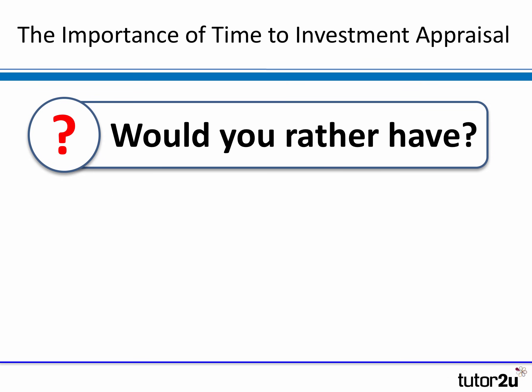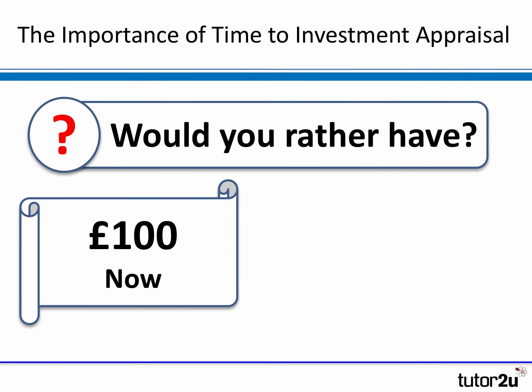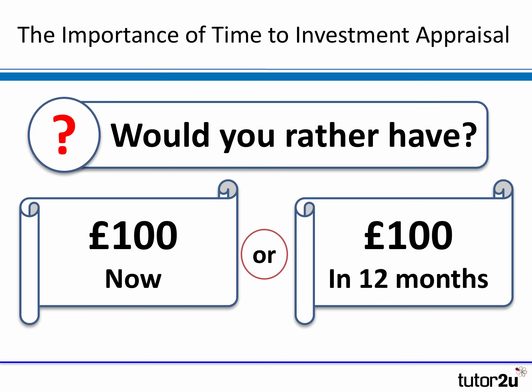The concept of net present value is really all about understanding what's known as the time value of money. So if you imagine I gave you two options: would you rather have £100 in your pocket now, or would you rather have £100 in your pocket in 12 months' time? The answer is you probably want the money now, because you could do something with it — you could earn a return on that money. And £100 in 12 months' time, well, there's an uncertainty as to whether it will arise, whether I'll actually pay it to you. So there must be some risk associated with the second choice.